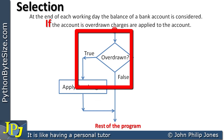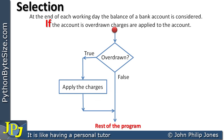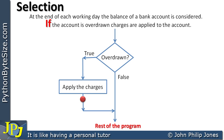I'm going to use a dot to show the possible routes through this program. One route is when we are not overdrawn — it's false that we're overdrawn. For the other possible route, we say yes, we are overdrawn — it's true. The path through the program will then apply the charges, executing whatever code is in there, and then carry on with the rest of the program.